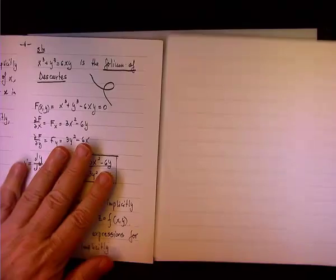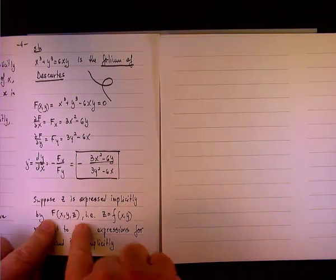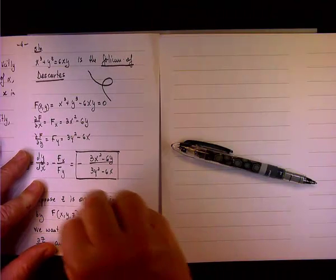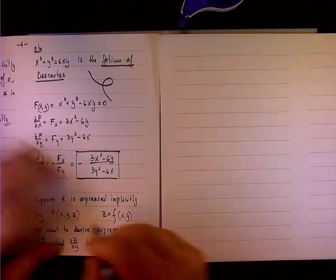So, as we did before, we take this, actually, I should include here F(x,y,z) equals zero.